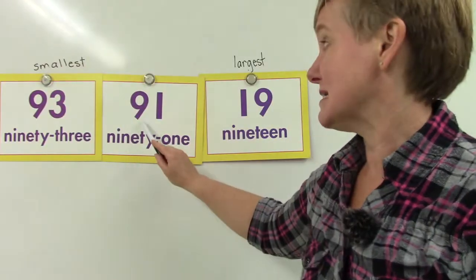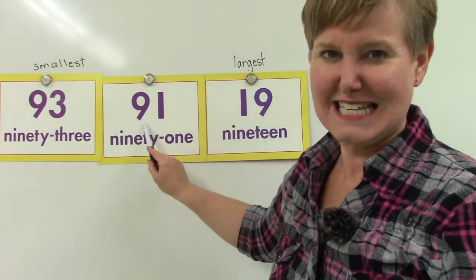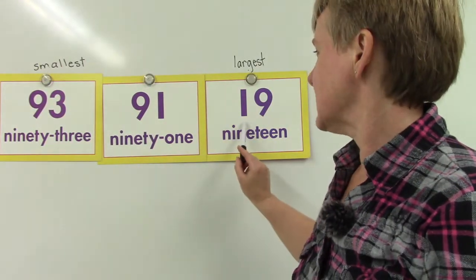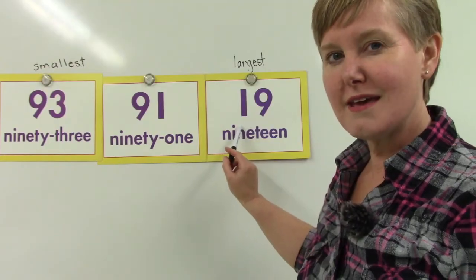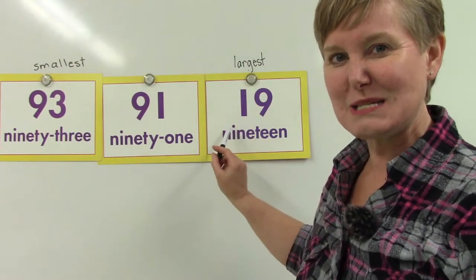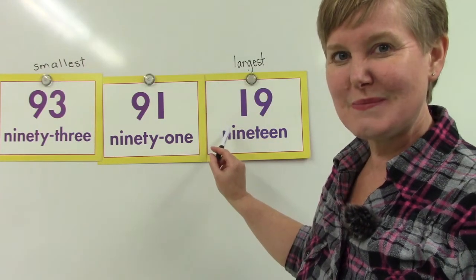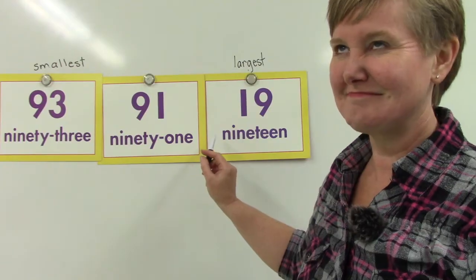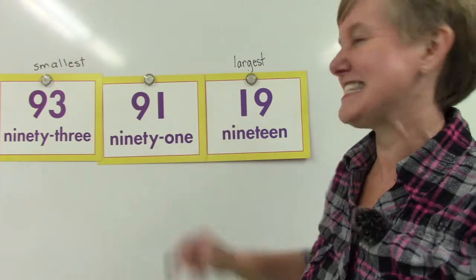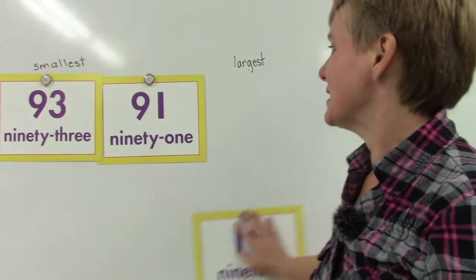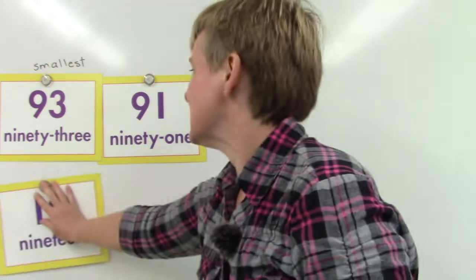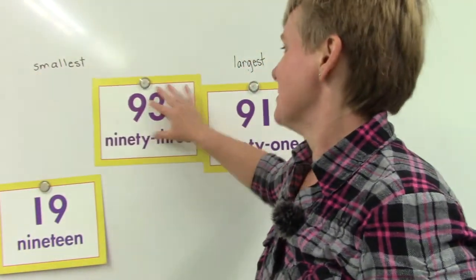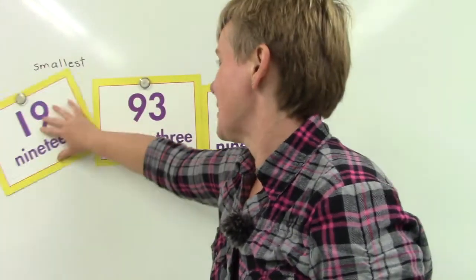In 91, 9 is in the tens place. And in 19, 1 is in the tens place. Which one of those is smaller? That's easy — it's the 1. So 19 is going to be our smallest number.